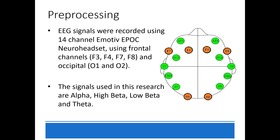EEG signals are recorded using the 14-channel Emotiv Epoch neural headset, using the frontal channels F3, F4, F7, F8, and occipital channels O1 and O2. The signals used in this research are alpha, high beta, low beta, and theta.